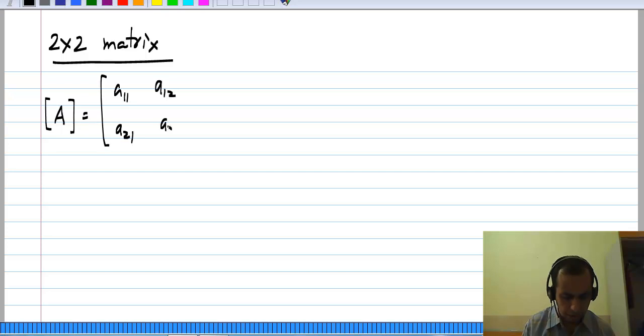Now let us take a 2 by 2 matrix A equals A11, A12, A21, A22.